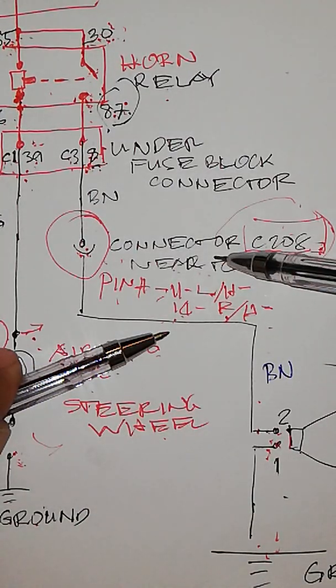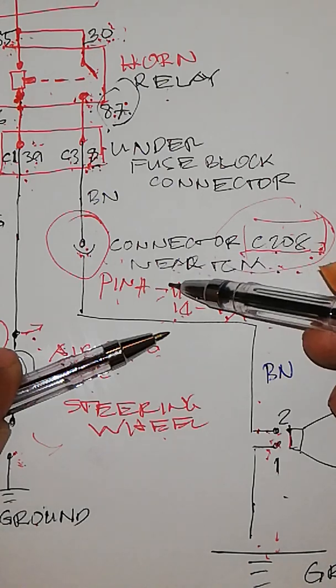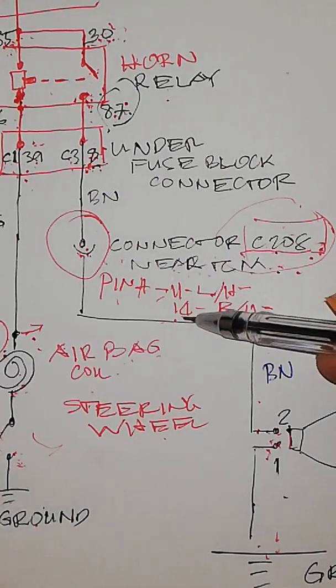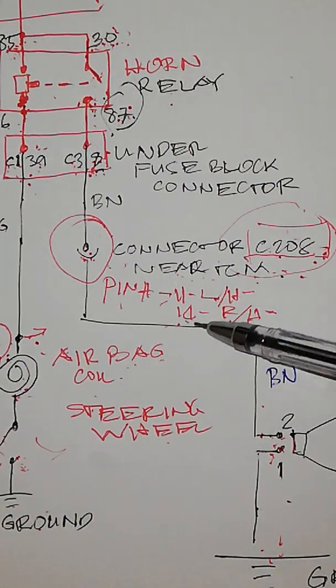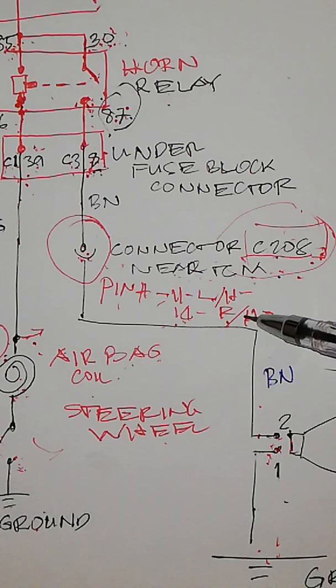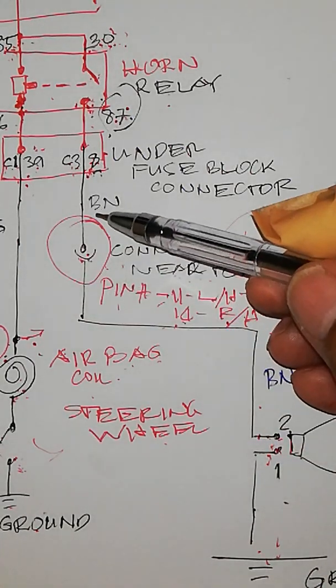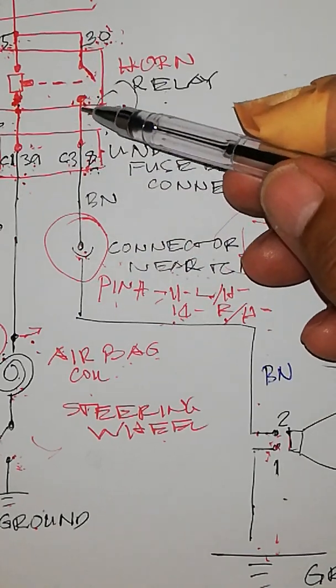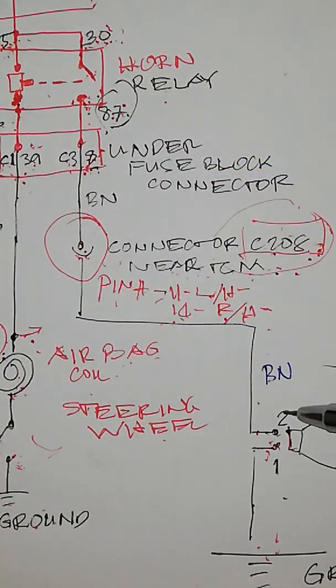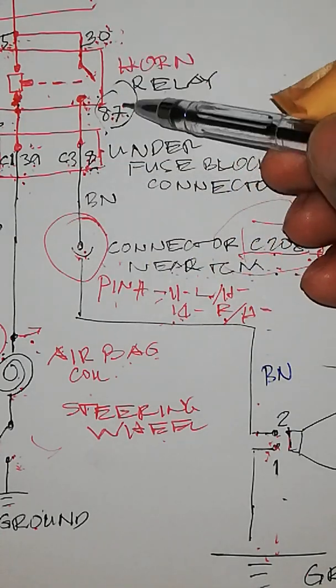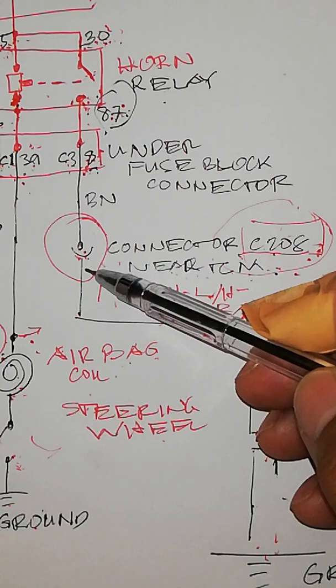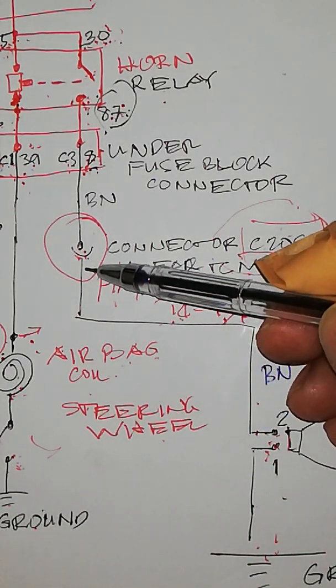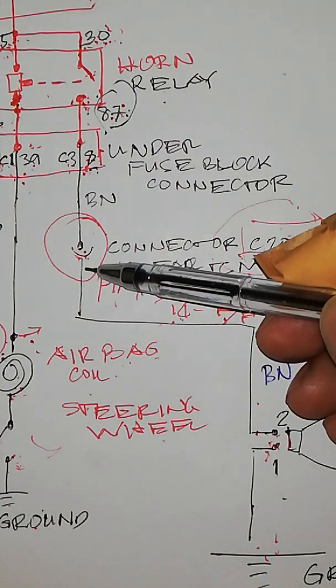That connector, they have pin 11 and 14. Pin 11 for left-hand drive, pin 14 for right-hand drive. Now, if your reading is OL between these two and pin 87, you check this connector pins, corroded or back out.